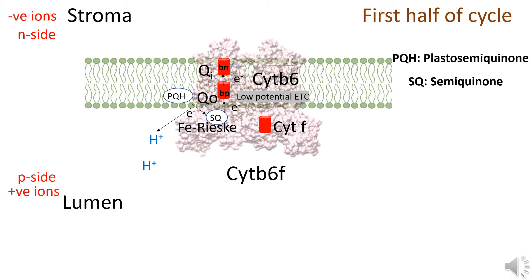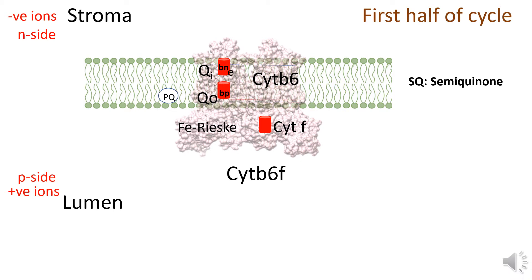Plastosemiquinone then releases another electron, which also delivers another proton (H+) to the lumen side of the thylakoid. The resulting semiquinone gives up another electron to the Bp heme of cytochrome b6, from which the electron is transferred to the Bn heme. This transfer through Bp and Bn is known as the low potential electron transfer chain. Since PQH2 has now been completely transformed to PQ, it exits the Qo site.